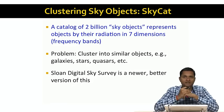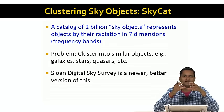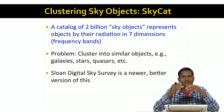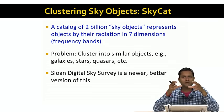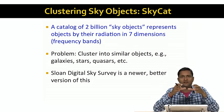Let's look at some real applications, starting with SkyCat. SkyCat is a catalog of two billion astronomical objects, and each object is represented by its radiation signature in seven dimensions of frequency bands. The problem is to take these seven dimensional data points and cluster them into real world objects — such as galaxies, stars, quasars, and so on — which are more similar to each other than they are to other things.